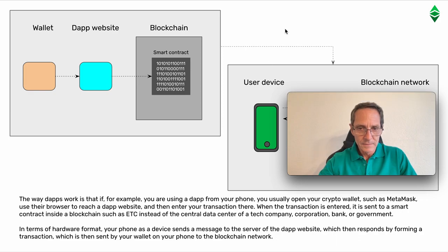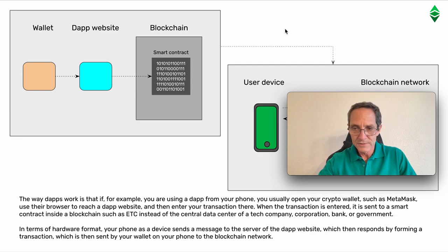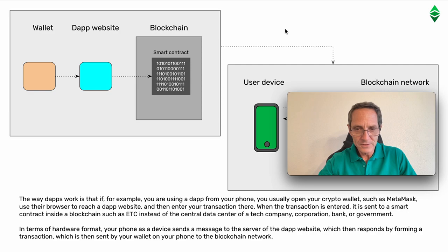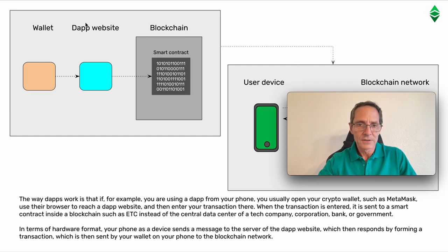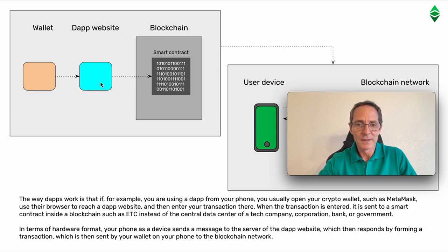The way dApps work is that if you're using a dApp from your phone, you usually open your crypto wallet such as MetaMask, use its browser to reach a dApp website, and then enter your transaction there. When the transaction is entered, it is sent to a smart contract inside the blockchain such as ETC, instead of the central data center of a tech company, corporation, bank, or government. In terms of hardware, your phone sends a message to the server of the dApp website, which then responds by forming a transaction. You use the browser of MetaMask to access a dApp website, for example Uniswap, and when you enter a transaction there it will eventually interact with a smart contract inside the blockchain.